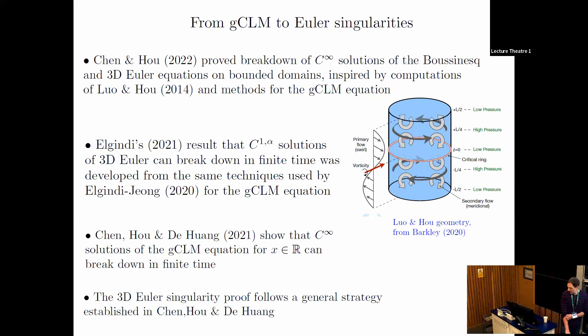Chen and Hou recently proved breakdown of C-infinity solutions of 3D Euler and the closely related 2D Boussinesq equation on bounded domains. These are inspired by computations of Luo and Hou, and by methods developed for the GCLM equation, the equation I'm going to talk about.